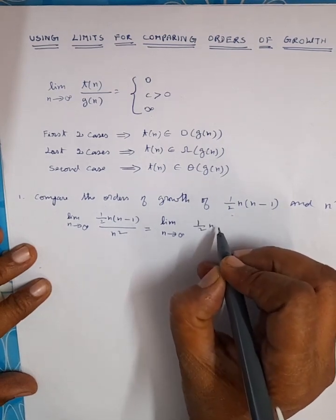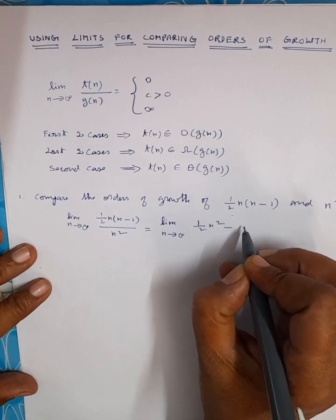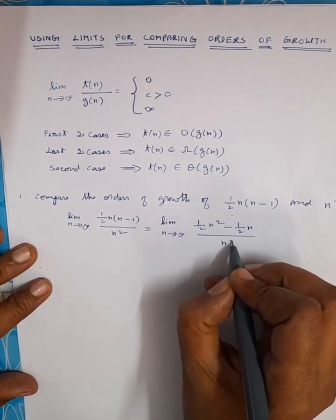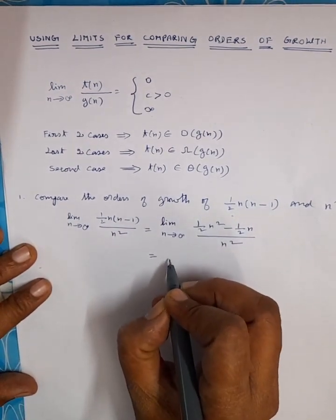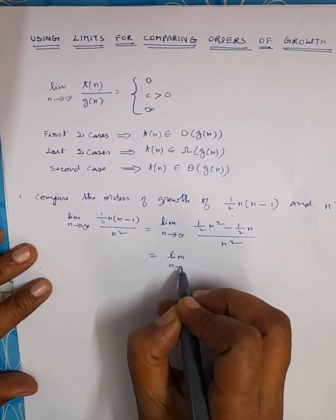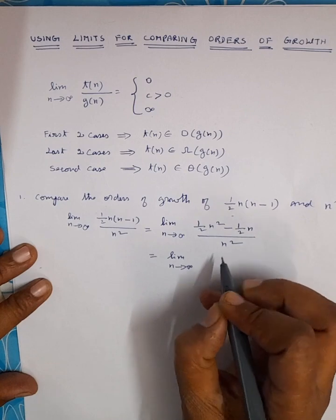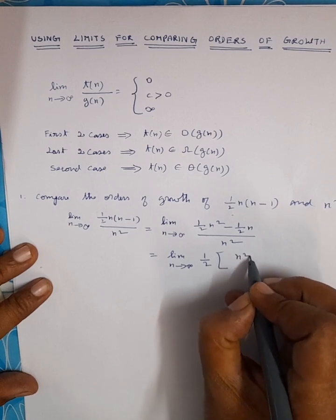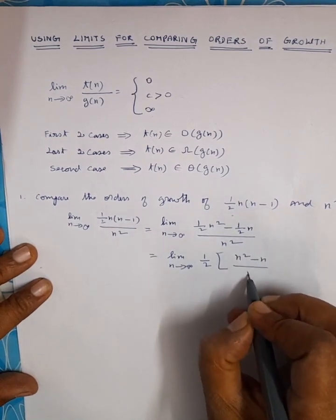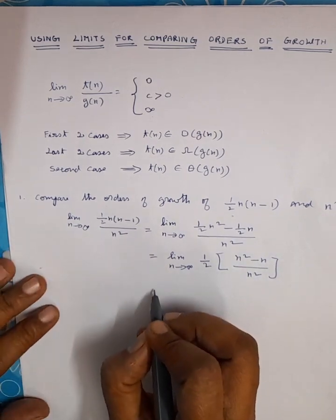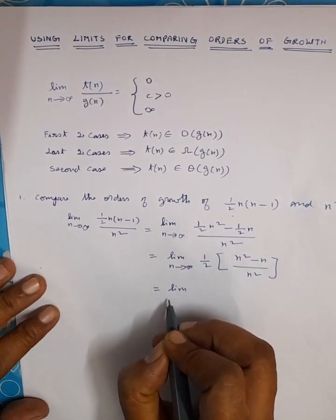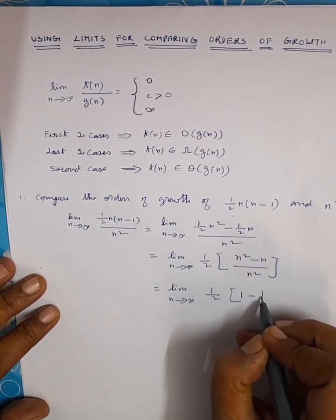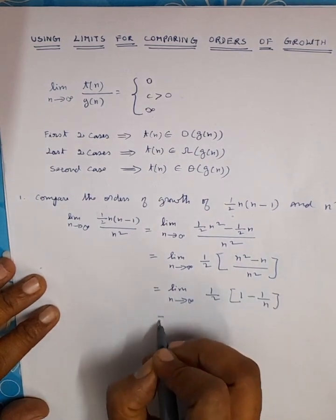We multiply ½n inside the parenthesis. After doing that we get limit n tends to infinity of (½n² − ½n) divided by n². Taking ½ outside, we get limit n tends to infinity of ½ into (n² − n) divided by n². After simplifying, we get limit n tends to infinity of ½ into (1 − 1/n).